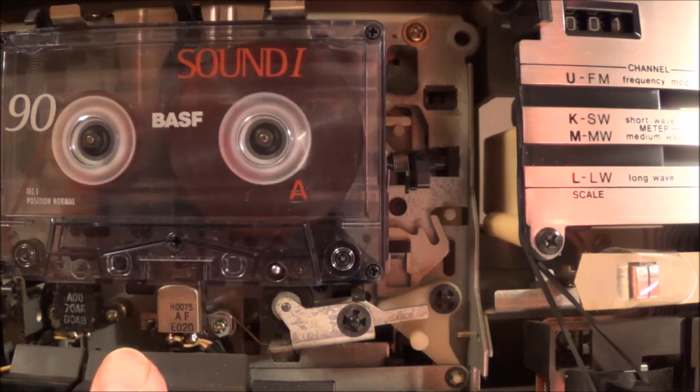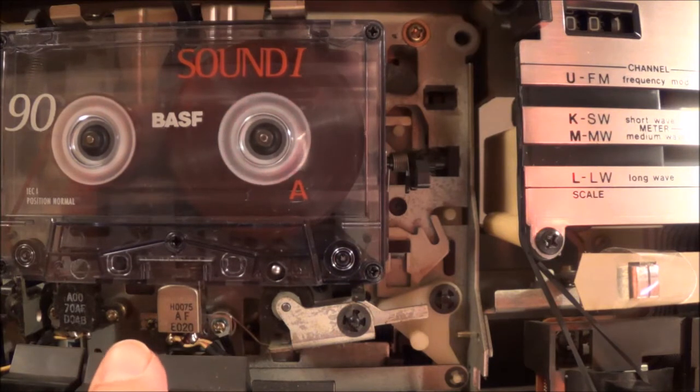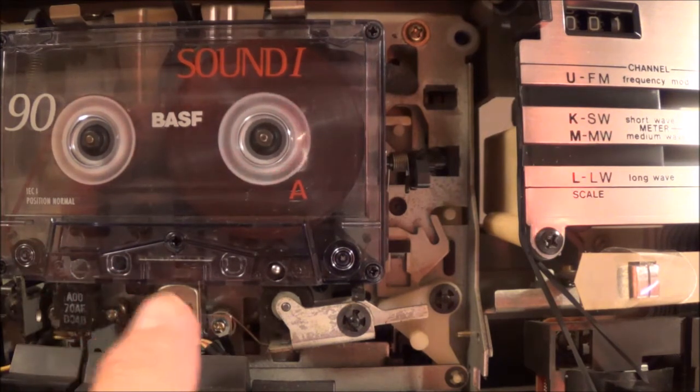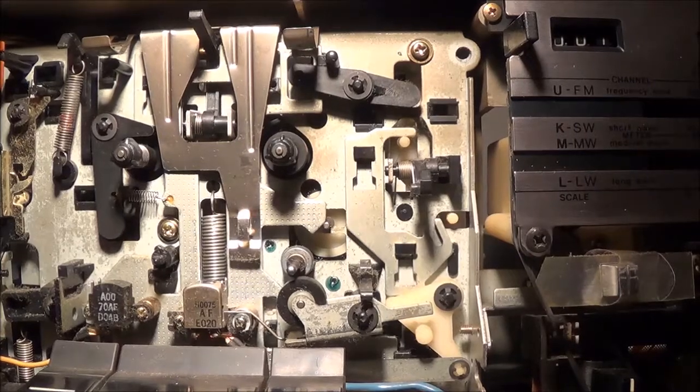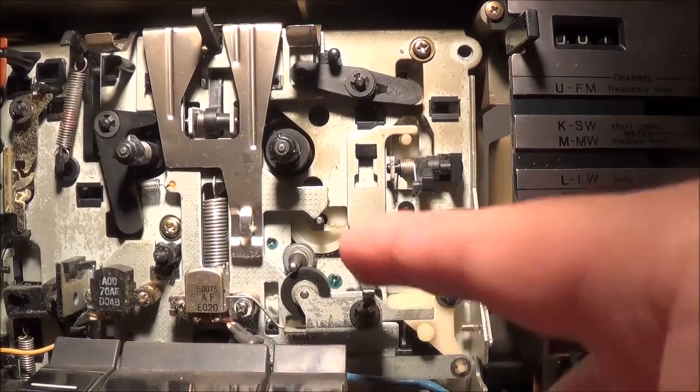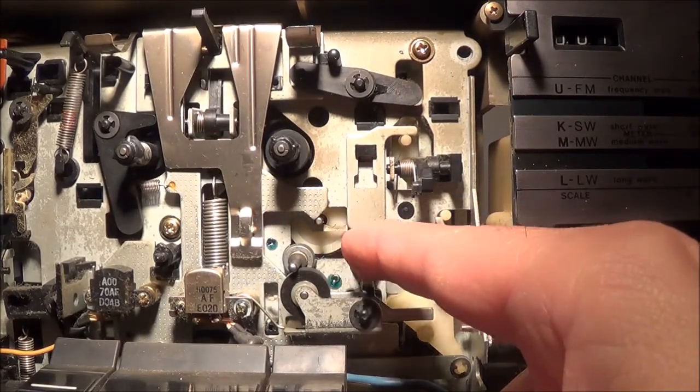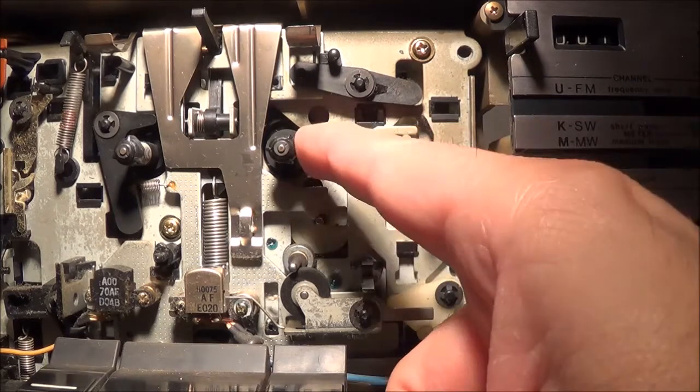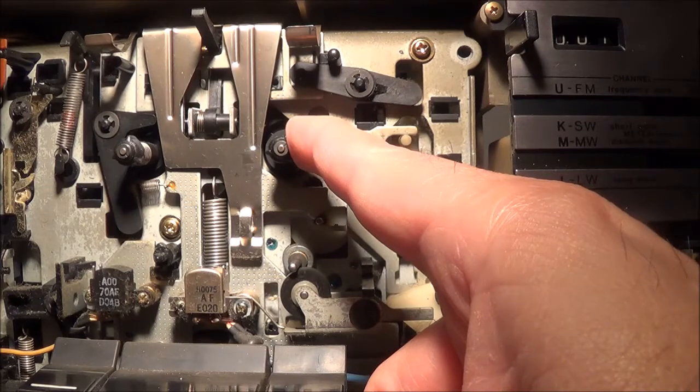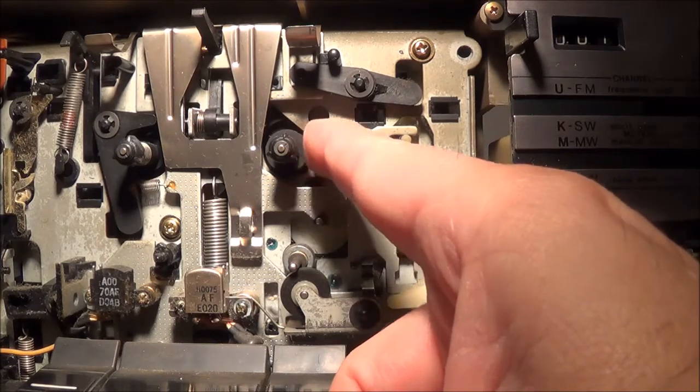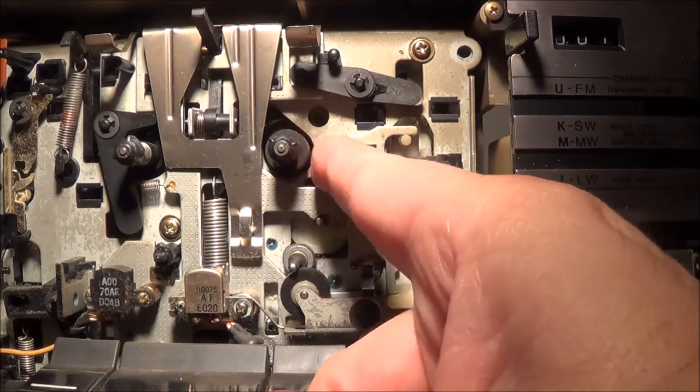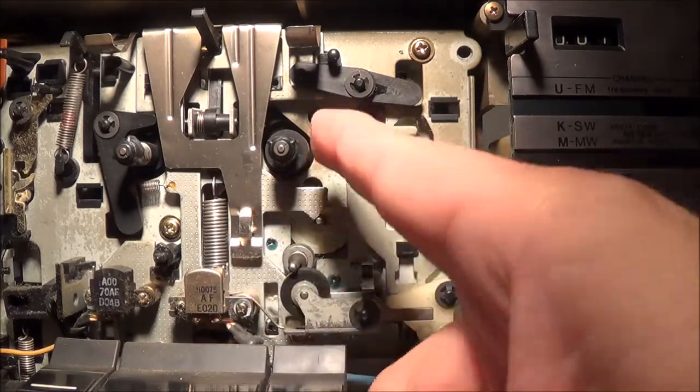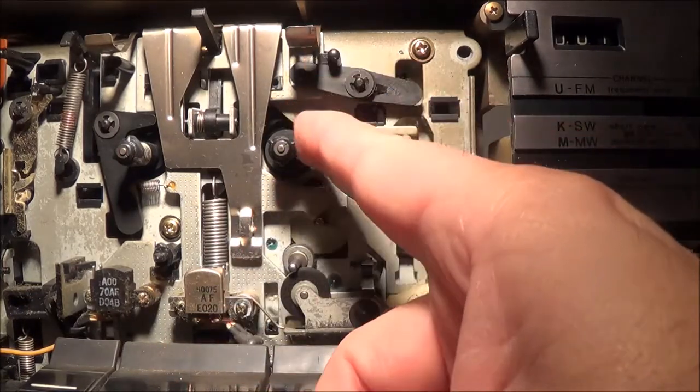The tape also shuts off at the end and the pause button seems to be working. Now when this capstan turns, this thing here is supposed to be turning too, but it's kind of like, I see right here, it wants to but it's binding. So I'm guessing there's a problem somewhere along the line here with this turntable.